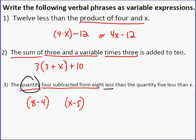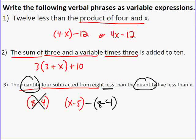However, this quantity is less than this quantity, and so it's actually going to be x minus 5 less than, or x minus 5 minus 8 minus 4. Because the 8 minus 4 is less than x minus 5, so we're subtracting that.